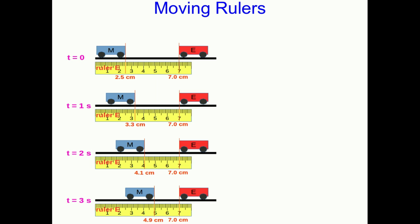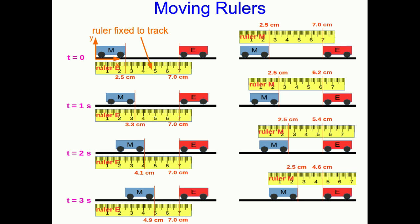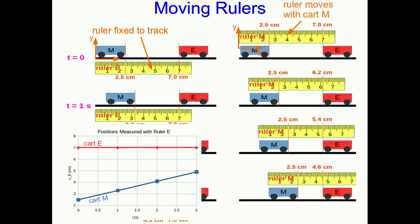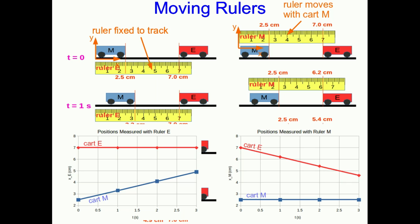We need to know about moving axes. Here's a cart E that's stationary relative to the Earth, and a cart M that's moving relative to the Earth. We have a ruler E — called E because it's fixed to the track, stationary relative to the Earth. An axis really is a ruler: your x-axis is a ruler stuck in some direction, and your y-axis is another ruler perpendicular to it. So moving axes are moving rulers. Here's a ruler M, which is attached to cart M and moving along with it — just another axis, but a moving one.